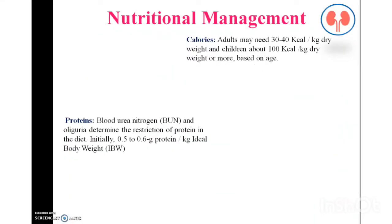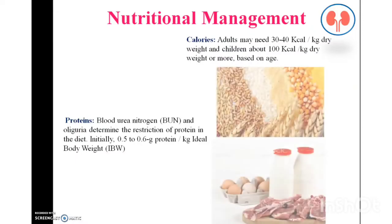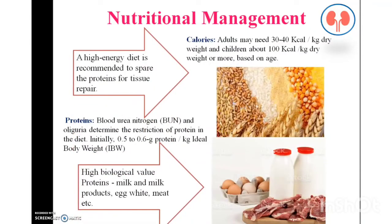Coming to the nutritional management of nephritis. The key nutrients are calories, protein, sodium, and minerals. A high energy diet is recommended to spare protein for tissue repair. For adults, 30 to 40 kilocalories per kg dry body weight is recommended, and for children, 100 kilocalories per kg. Protein should be restricted to 0.5 to 0.6 grams per kg because blood urea nitrogen levels are elevated. High biological value proteins such as milk, milk products, and white meat are recommended to reduce blood urea nitrogen levels.